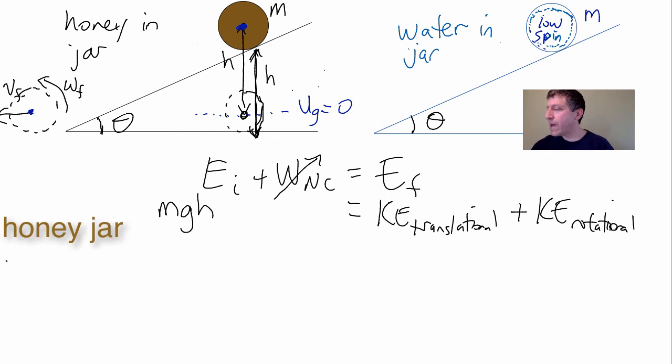For the honey, MGH is our initial energy. Our final energy is going to be KE translational, let's call it KE trans, plus, now this one because all of the honey is spinning, that's going to be a greater moment of inertia. It's going to have more energy wrapped up in rotational, so I'm going to make this really large KE rotational.